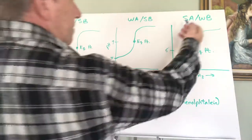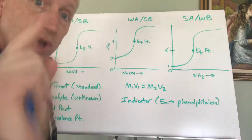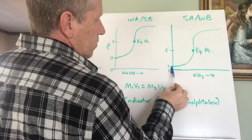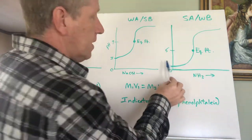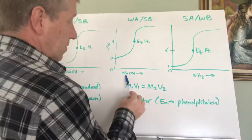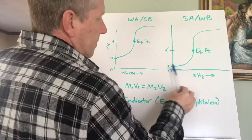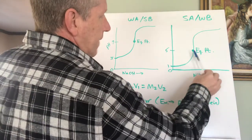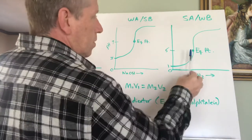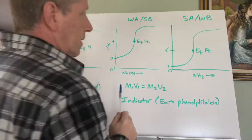With a strong acid and a weak base, the strong acid dominates. We start at pH 1 with a strong acid, and add a weak base like ammonia — not NaOH, since that's a strong base. The pH rises, you get the steep part of the curve, but the equivalence point will be at a pH of around 5, in the acidic range, because the strong acid dominates the weak base.